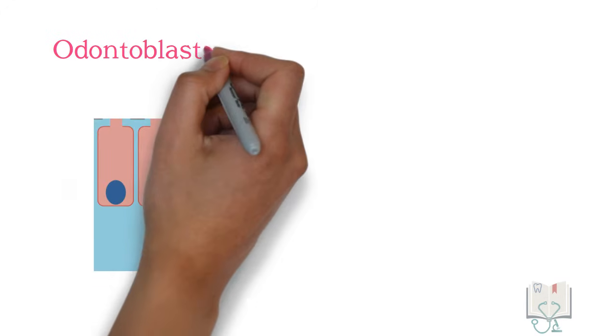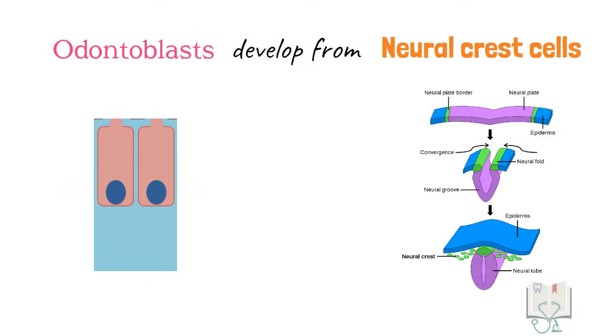This theory was given on the basis of the fact that odontoblasts develop from neural crest cells, so it was thought that they may have some neural properties.